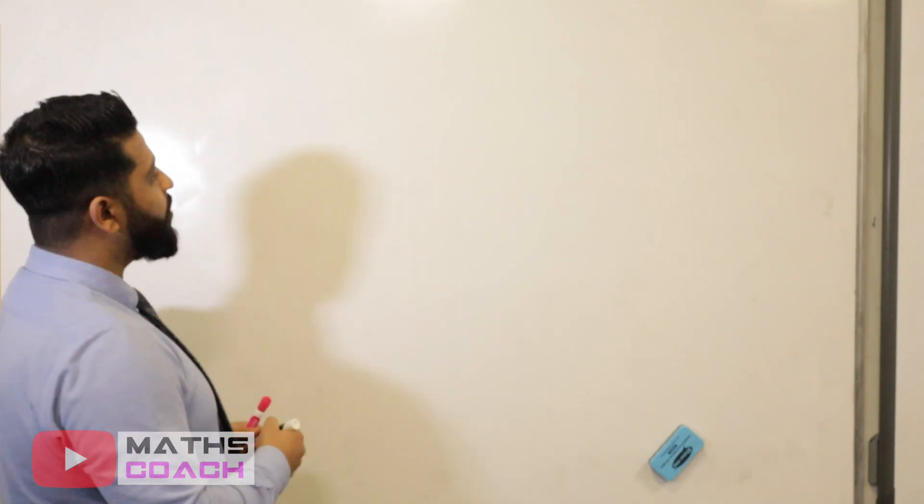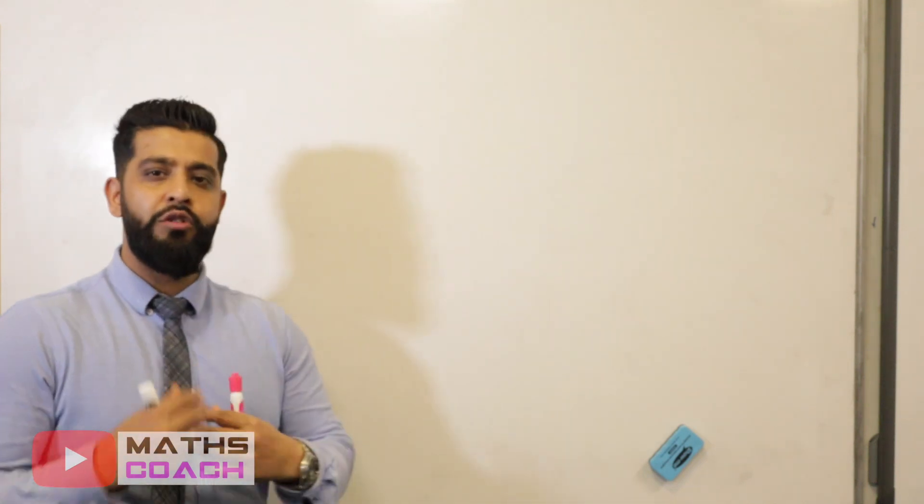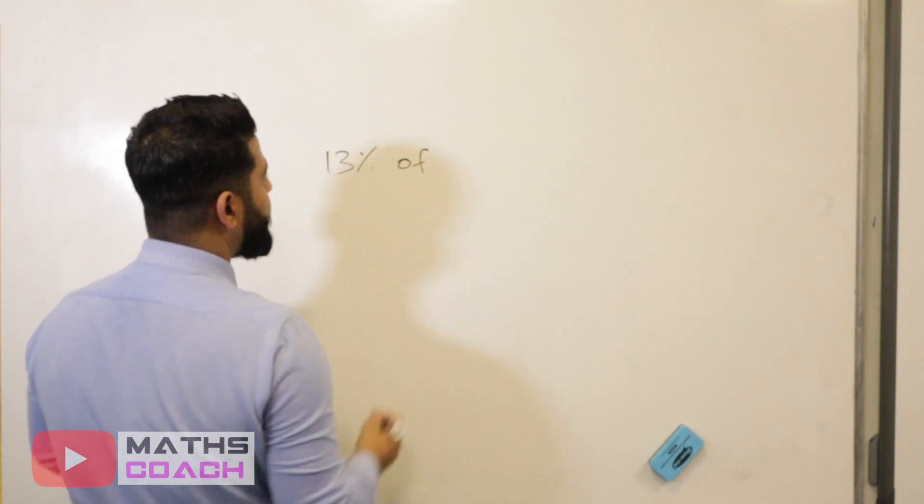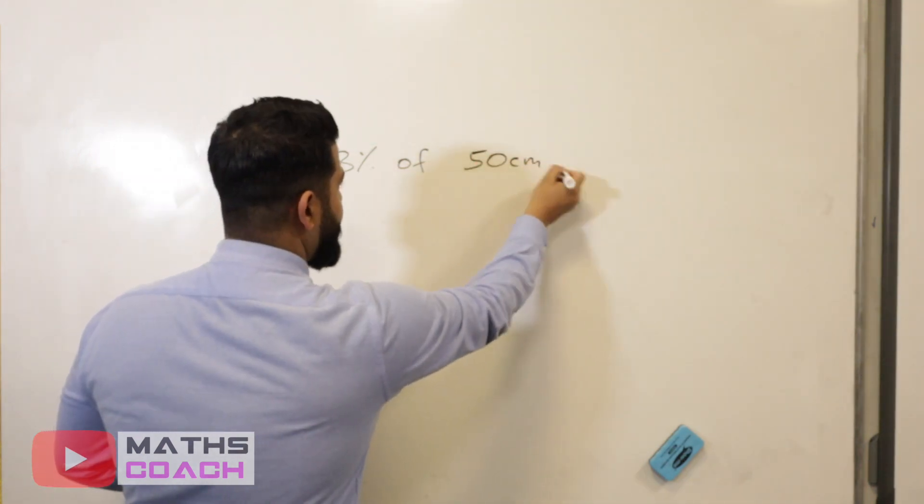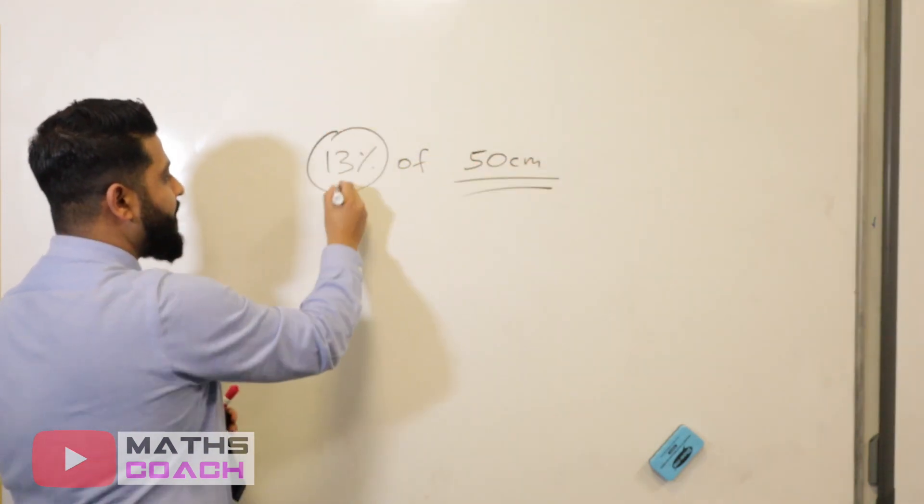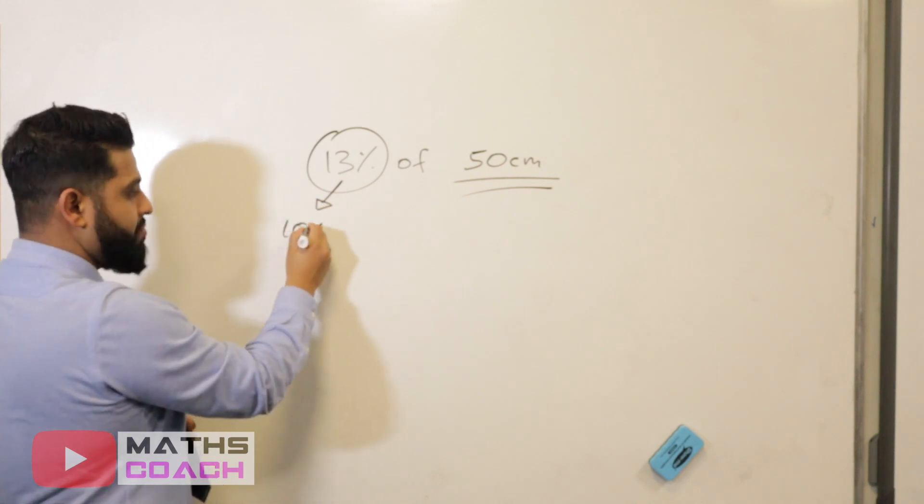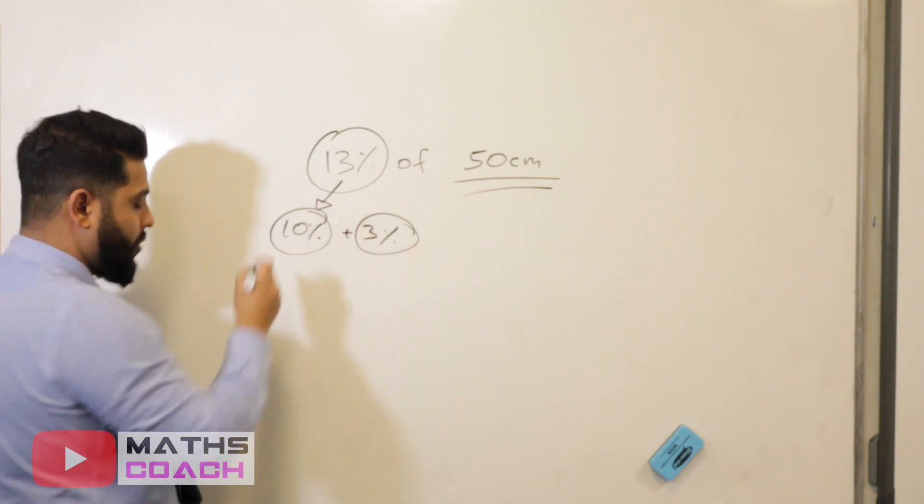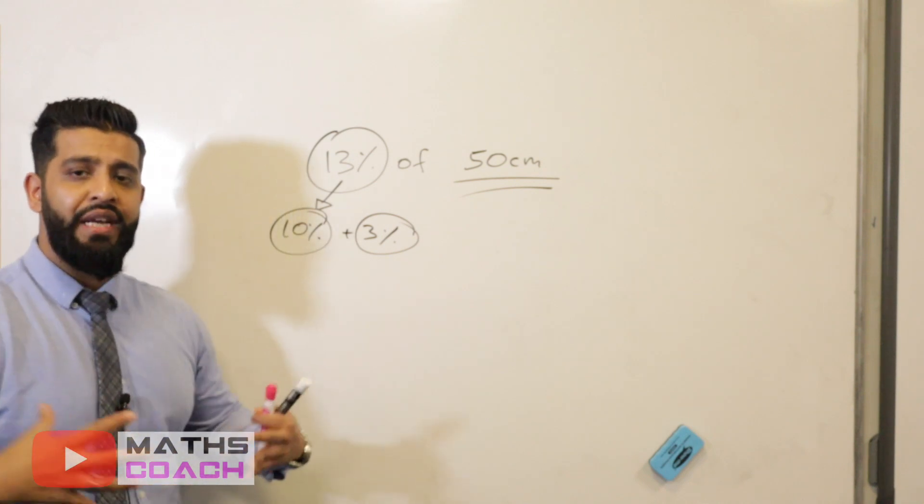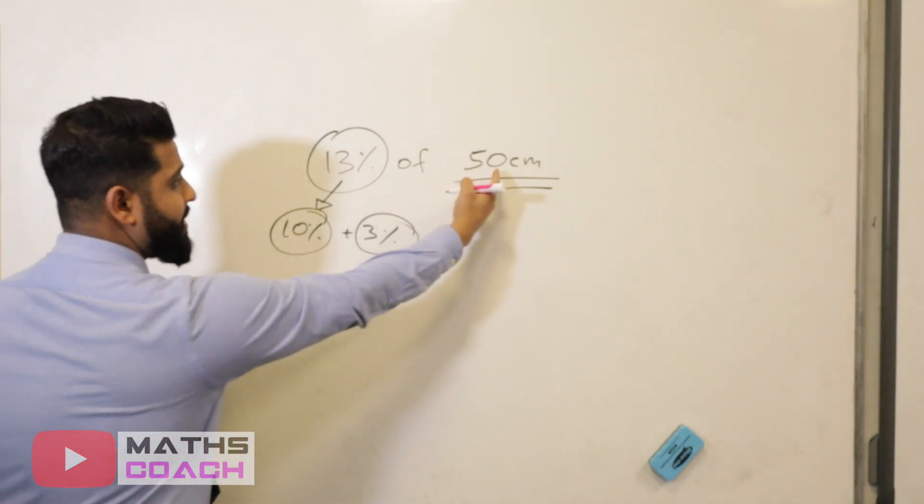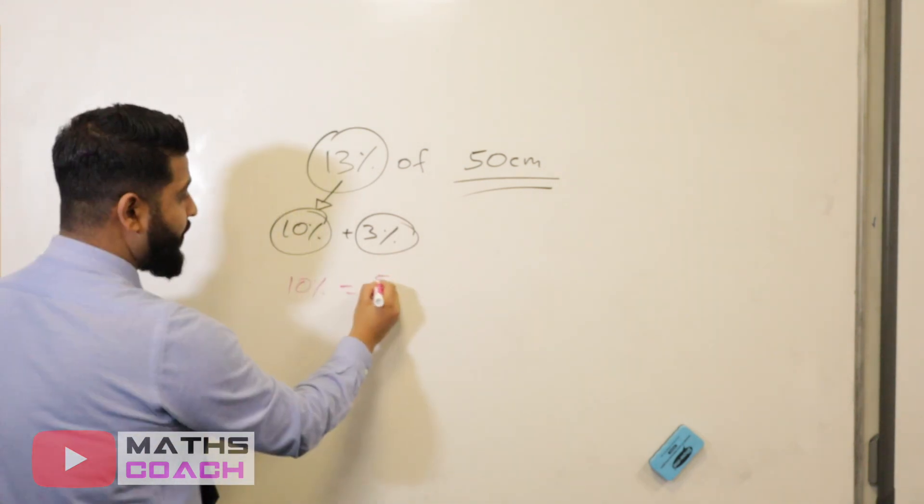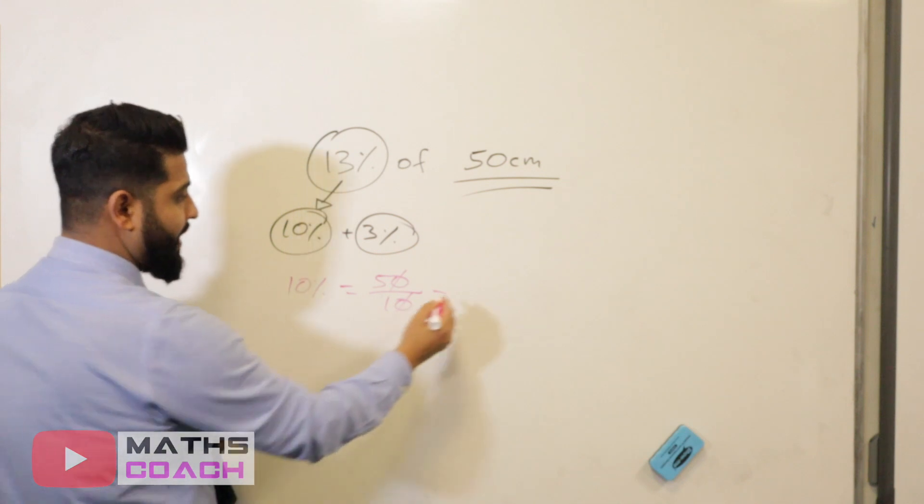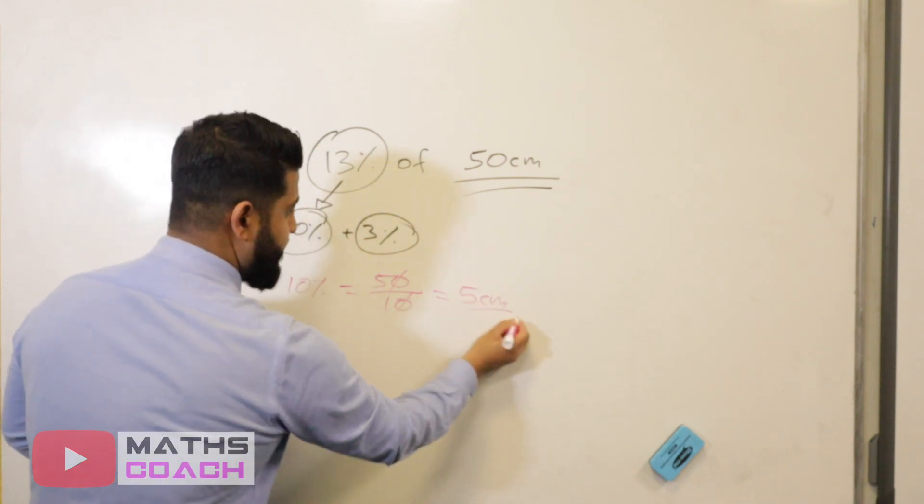This time, we will work out something that uses the 1%. So let's work out 13% of 50 centimeters. What is 13% made up of? It's made up of 10% and 3%. So we want to find those percentages individually and then add them together. To find 10% of 50 centimeters, we do 50 divided by 10, cancel out the zeros, and that gives us 5 centimeters.